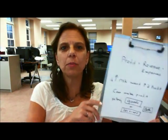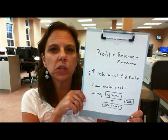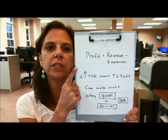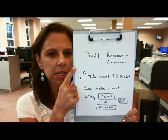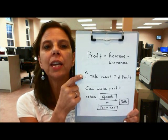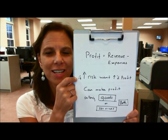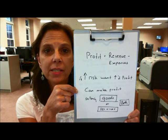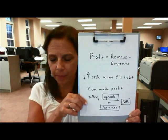Hi, it's Lori. We're going to answer those questions about Chapter 1. The first question was, how are profits and risks related? Before we can answer that question, we need to understand what profits are. Profits are revenue minus expenses. If we increase the risk, then we need to increase the profit to make it worth our while. You can make a profit by selling goods or services or both.